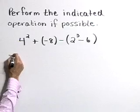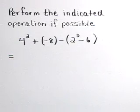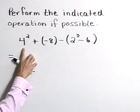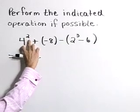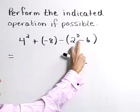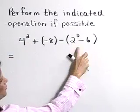Let's use the order of operations to simplify this. The order of operations indicates that we can take care of this exponent and this exponent that's in the grouping symbol at the same time.